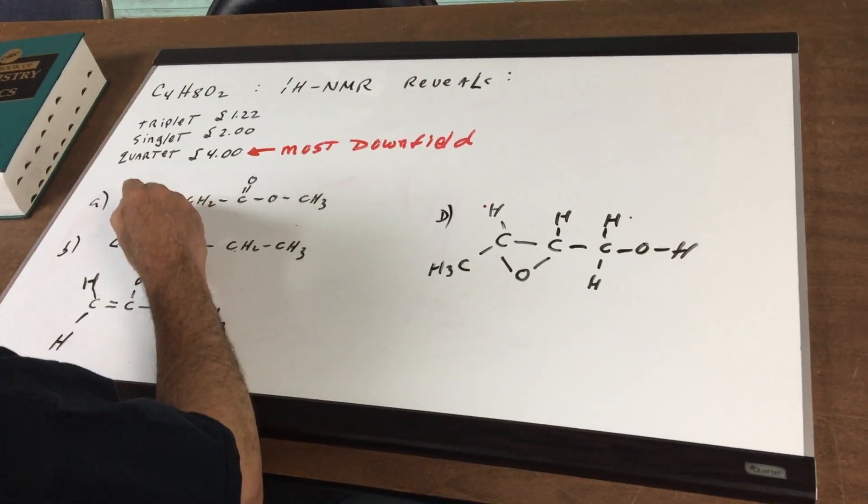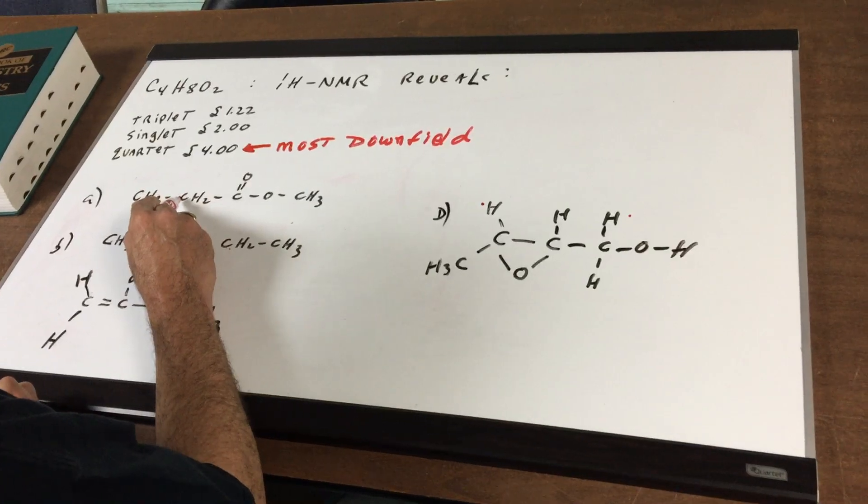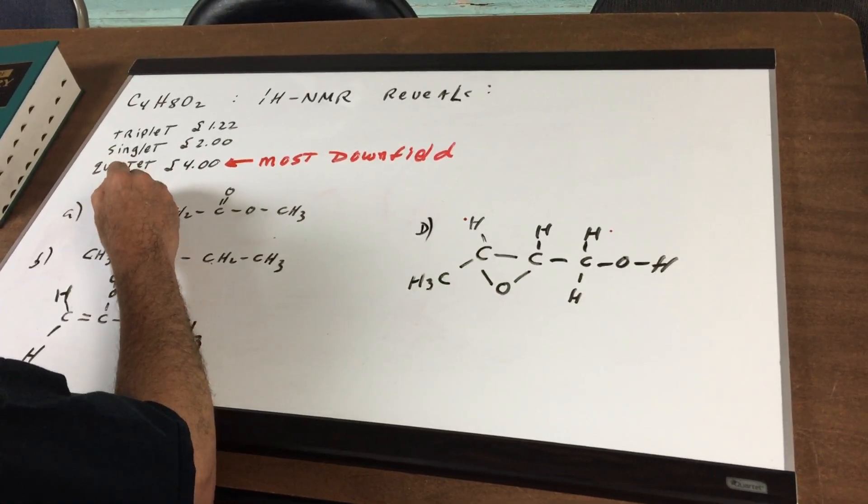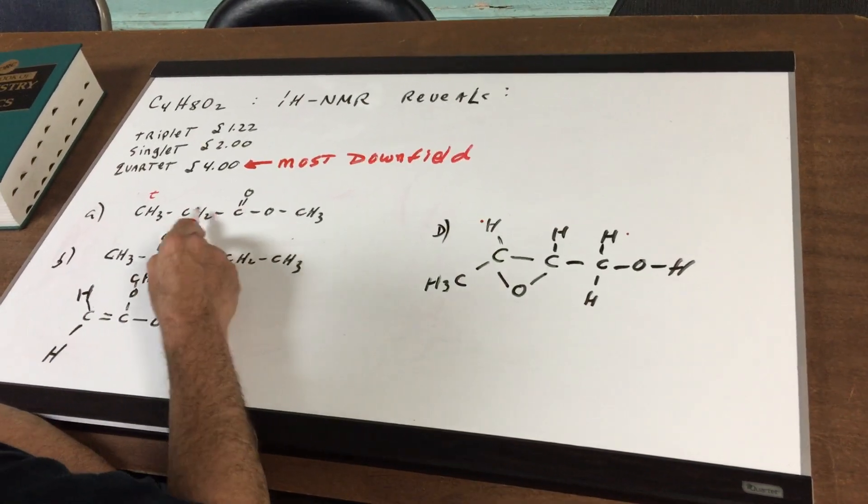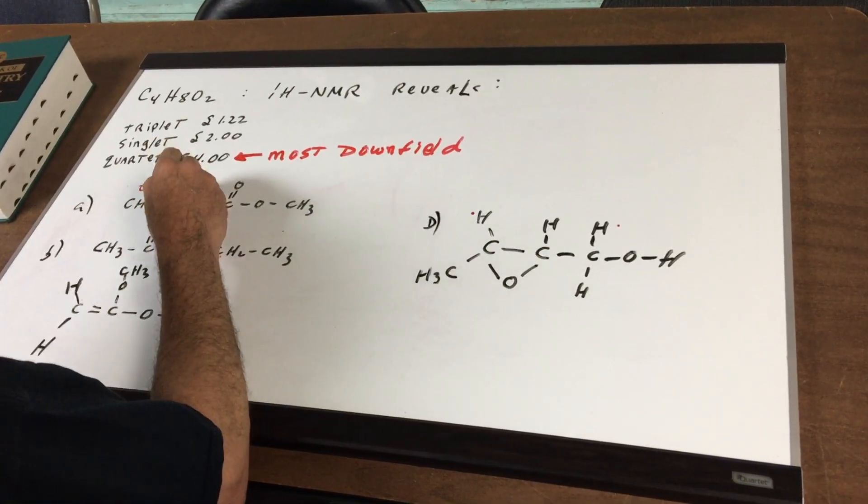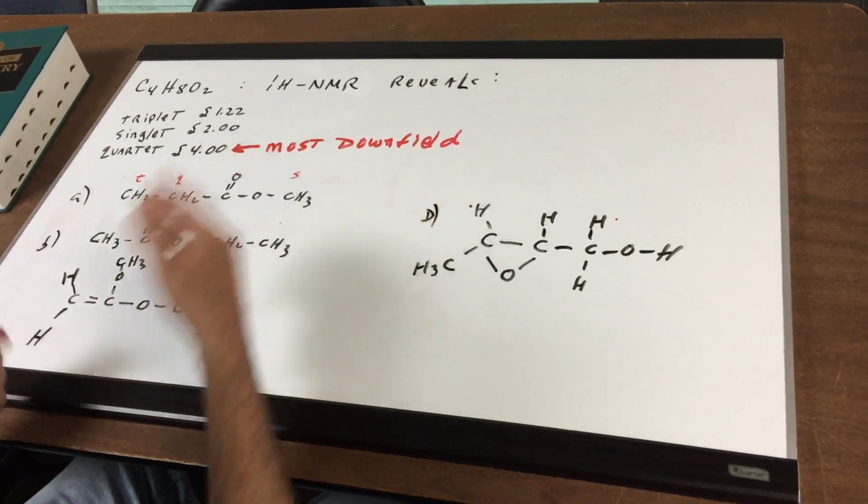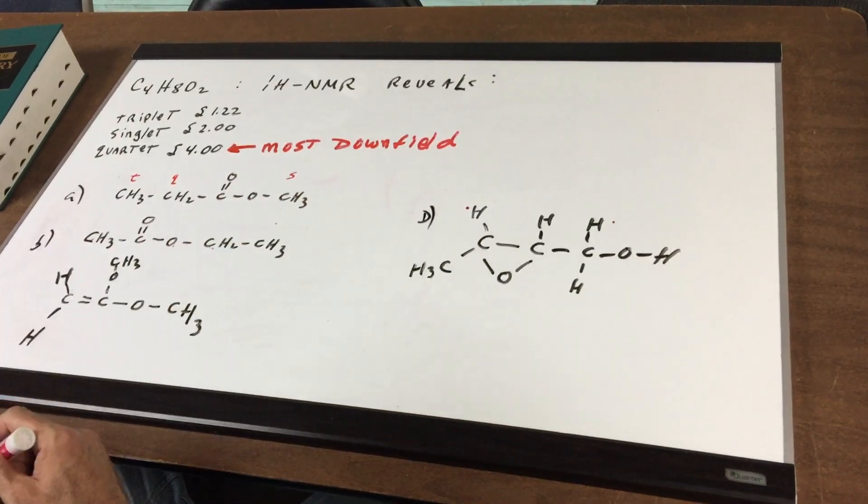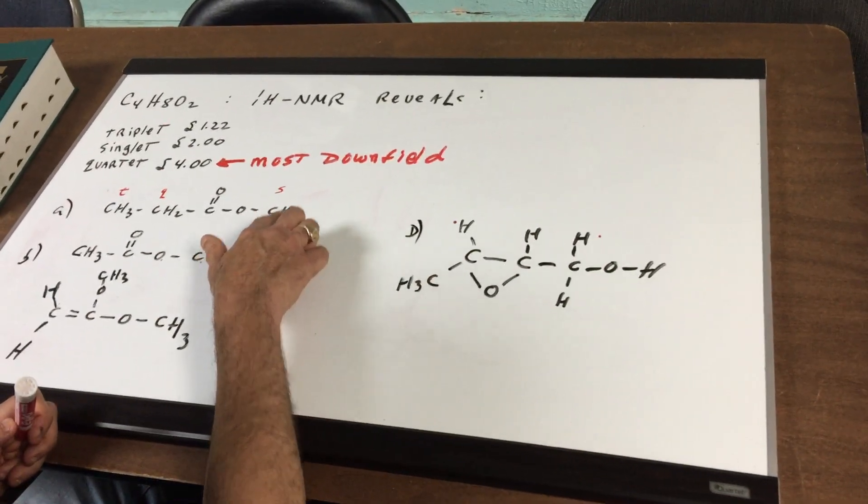So if we went to this first one, you would see that this carbon has three H's and those H's you jump to your next door carbon and you see that there's two hydrogens. Therefore you use the N plus one rule and you would see that these H's would give a triplet. This CH2, you jump to the carbon to the right of you, there's nothing, no H's. Here there's three H's, you add one, that would be a quartet and this would be a singlet.